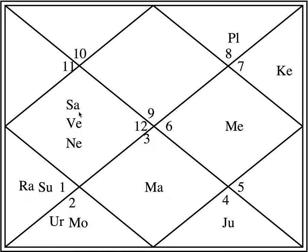If I want to calculate the fourth house from the fourth house, it will be the seventh house — fourth from the fourth: first, second, third, fourth. Fourth house from the seventh house comes to the tenth. Fourth from the tenth is the lagna itself. So all the Kendra houses are placed four, seven, and ten to each other. The first house is placed fourth from the tenth, seventh from the seventh, and tenth from the fourth house. It is very easy to understand.